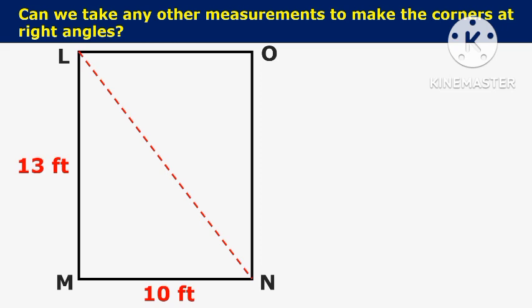Can we take any other measurements to make the corners at a right angle? The answer is yes. As you can observe in the drawing, the two sides of the building are 10 feet and 13 feet in length. Here you have to calculate the hypotenuse for any convenient length you have taken by calculating the diagonal of the building LMNO.